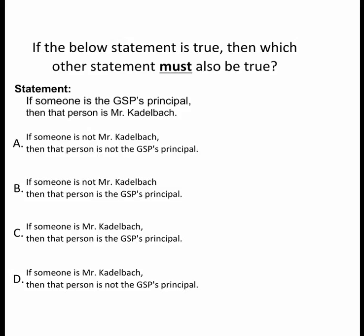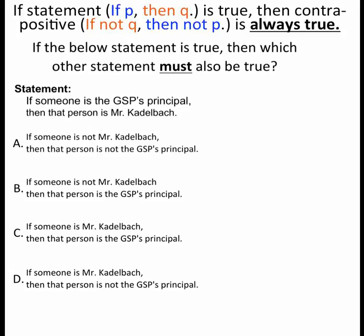What we know is that if a conditional statement is true — if P then Q — then its contrapositive, if not Q then not P, is always true. So if I take the two pieces of the conditional statement and flip them and put nots in front of them, then that will always be true.